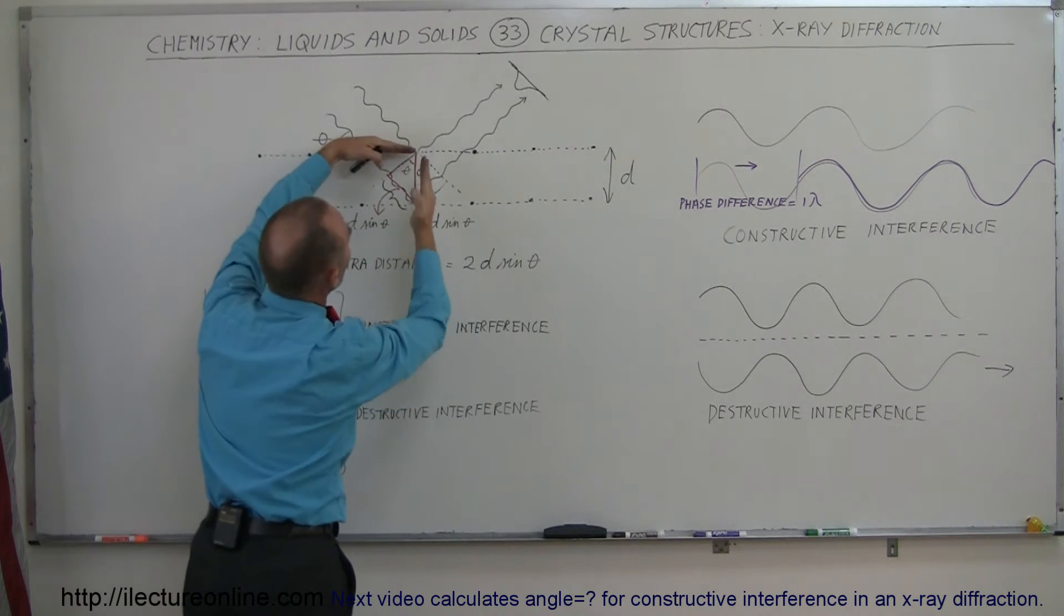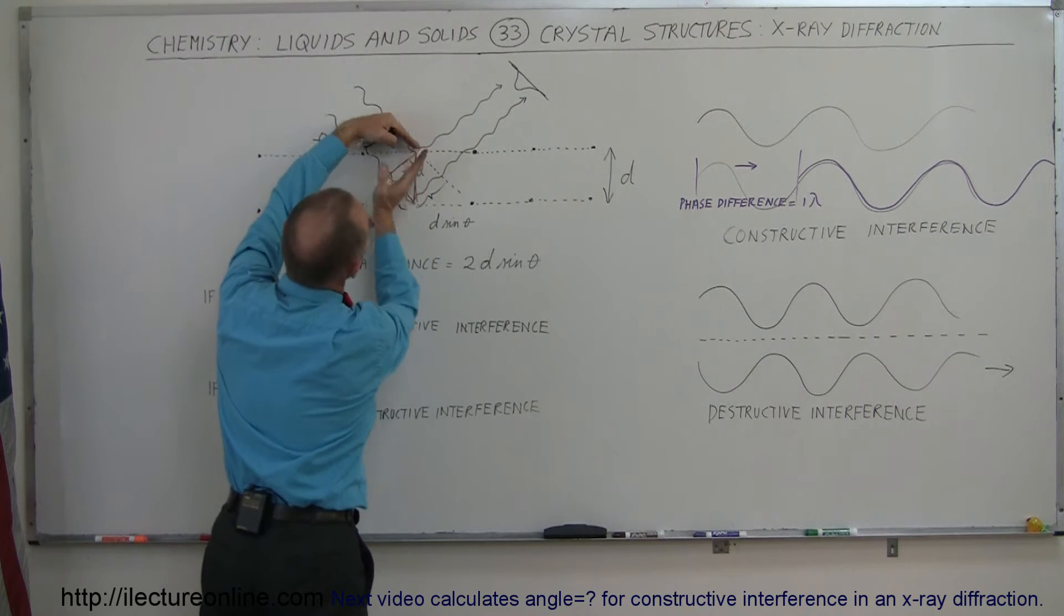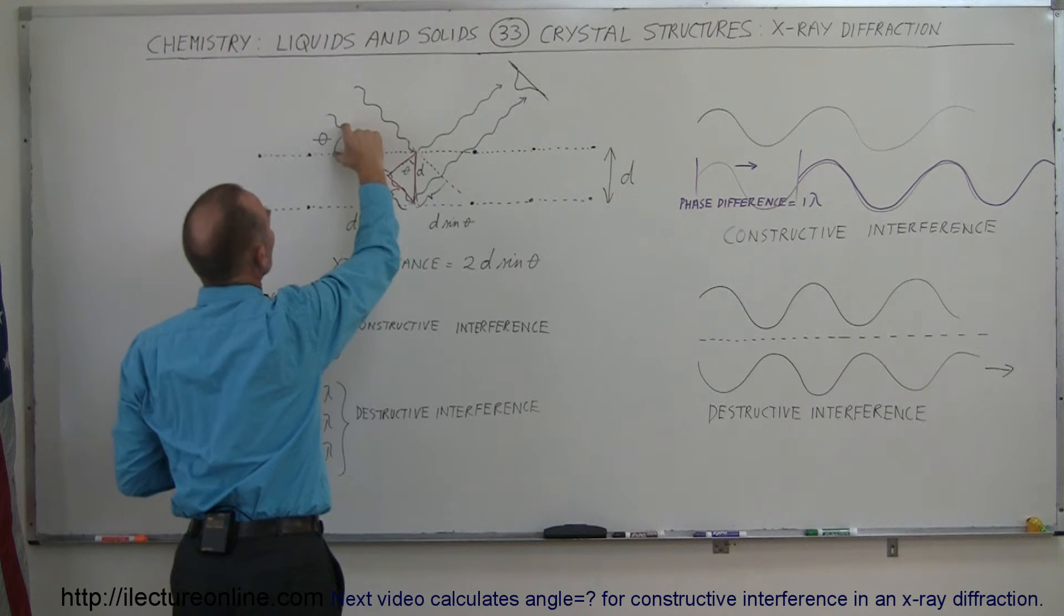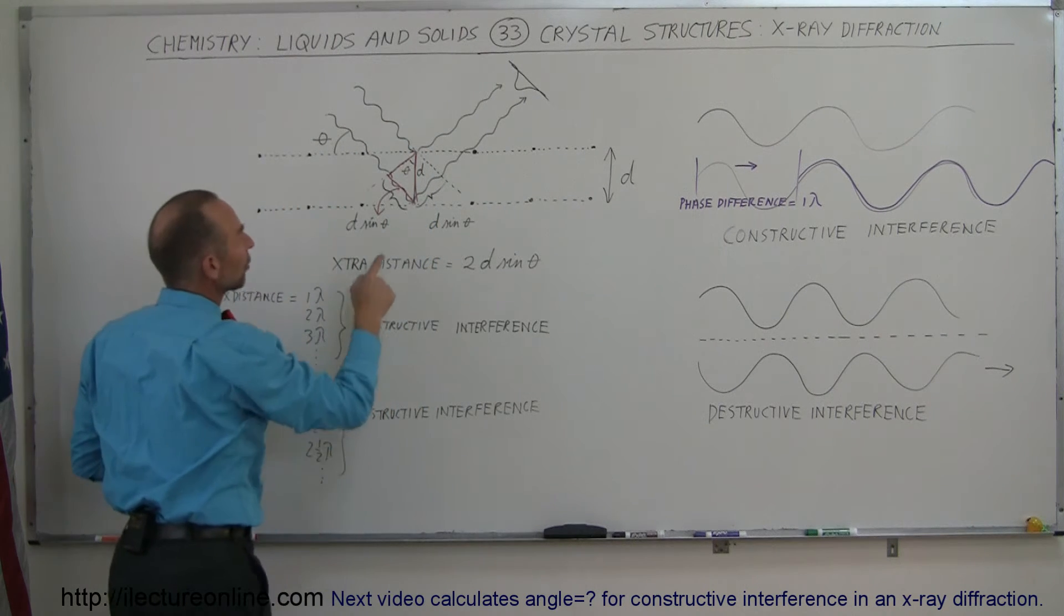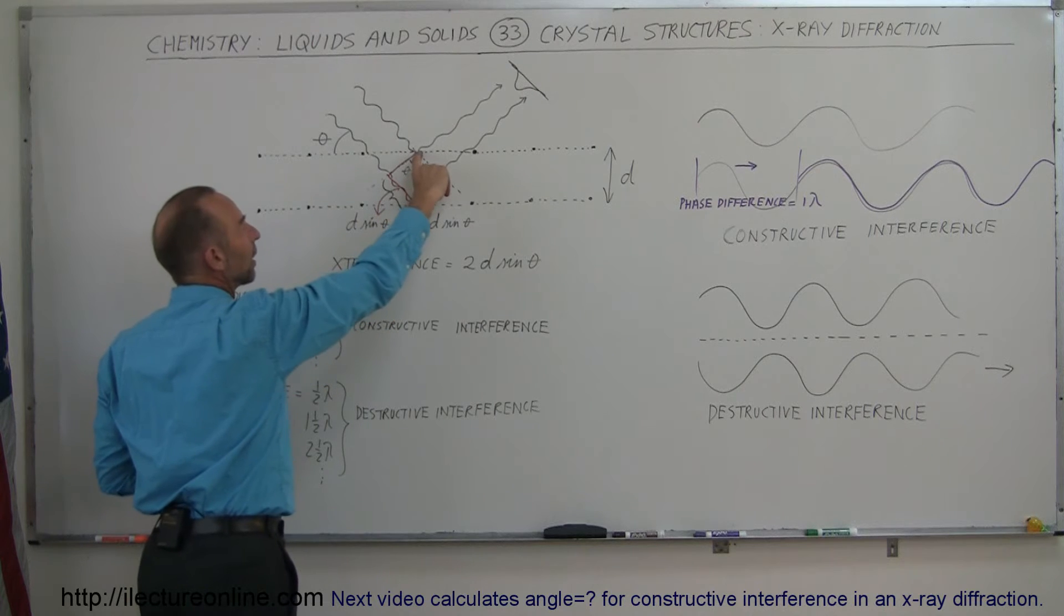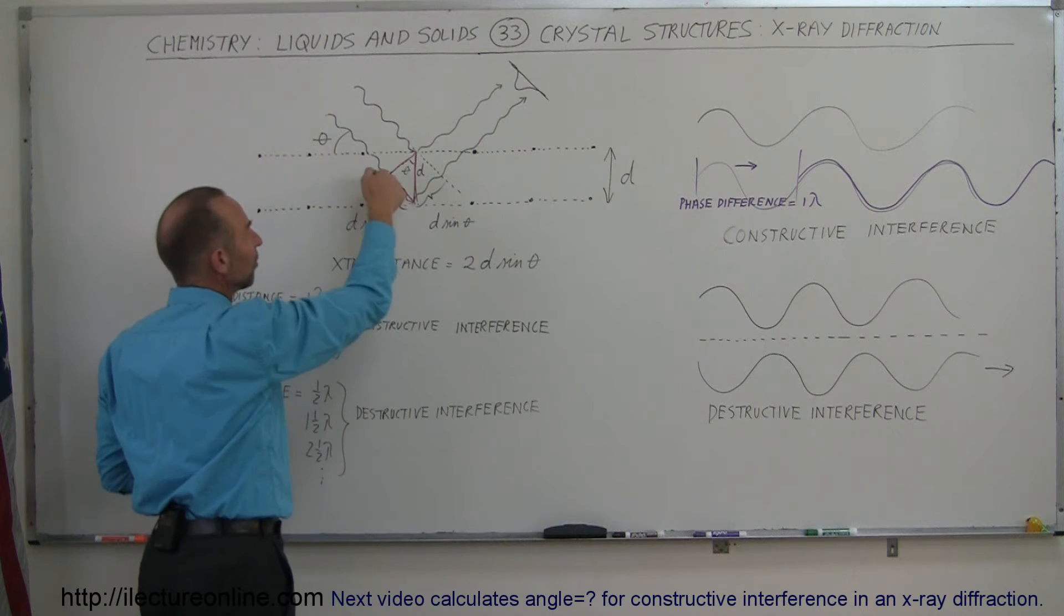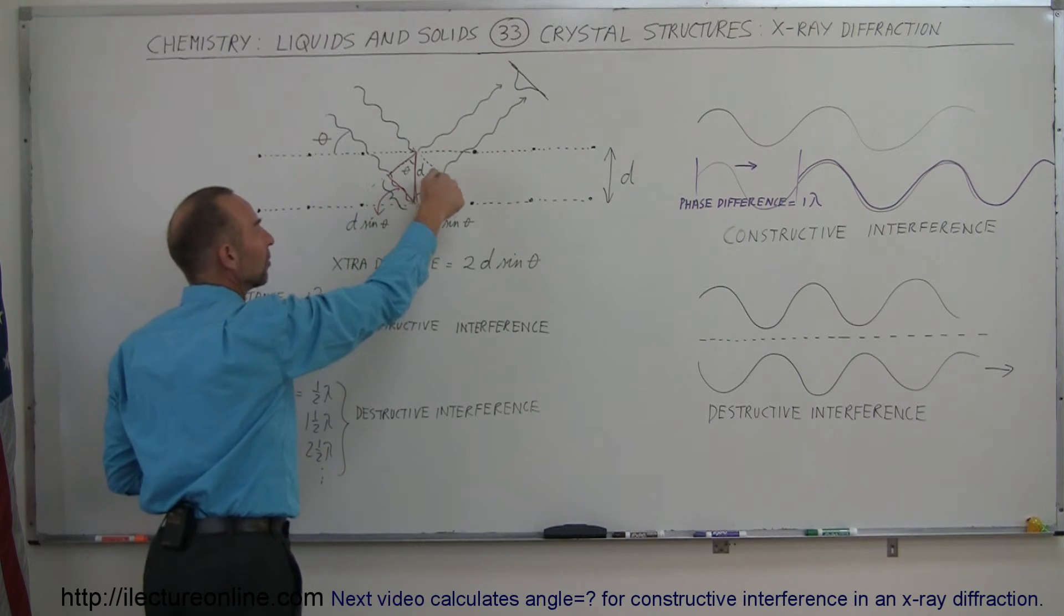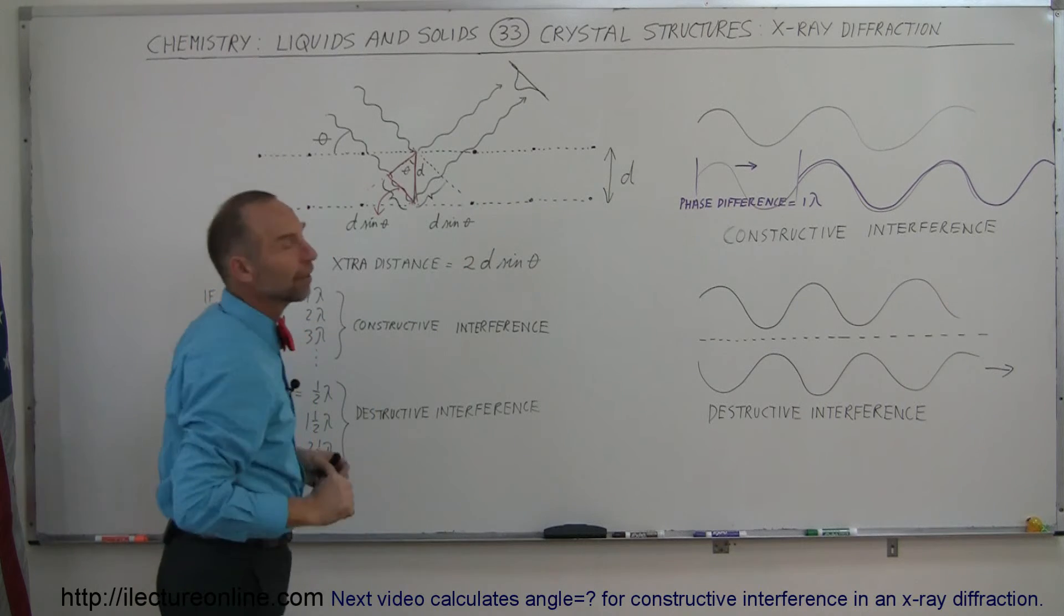Notice that this line is perpendicular to that line and this line is perpendicular to this line, so the angle inclusive between those two lines has to equal the angle inclusive between those two lines. So notice that this right here is equal to the hypotenuse times the sine of the angle theta since it's the opposite side to the angle. And since the beam has to travel this extra distance plus this extra distance, the extra distance is 2D sine theta.